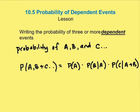The last thing I want to talk about is what happens if you need to write and solve a probability with three or more dependent events. So the probability of A and B and C happening all together — you just write the probability of A times the probability of B given A, times the probability of C given A and B. And if I had a D, it would be the probability of D given A, B, and C.